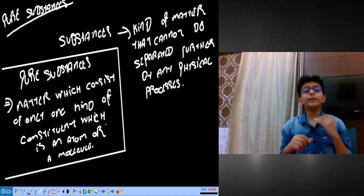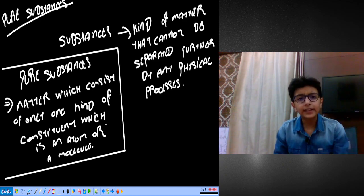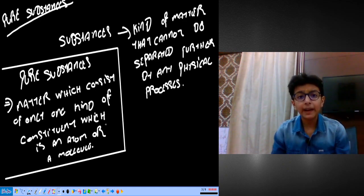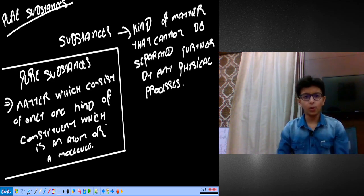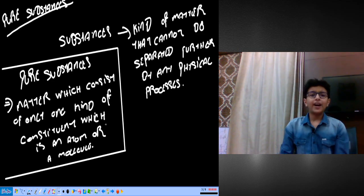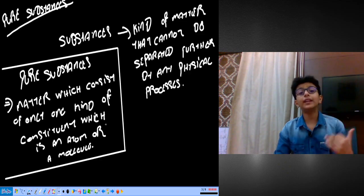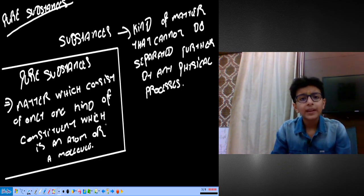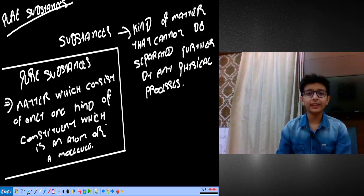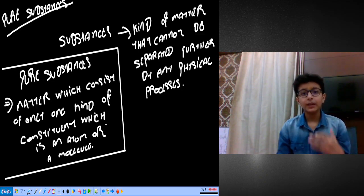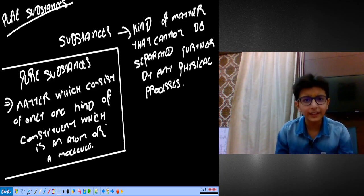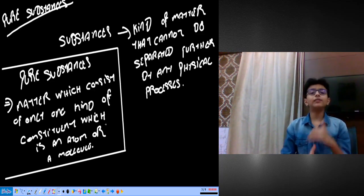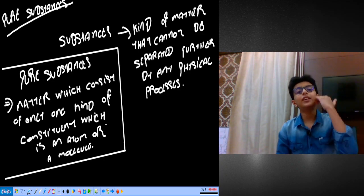First of all, we need to know what substances are. The kind of matter that cannot be separated or split further by any physical process is known as a substance. There is no matter that cannot be separated by any physical process — which would be filtration, sedimentation, decantation. There are many physical processes. That matter is known as a substance.